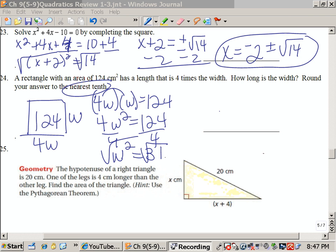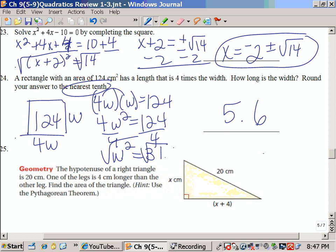The square root of 31 rounded to the nearest tenth is approximately 5.6. Technically I should be doing plus or minus, but since we're talking about length and width, I'm just going to use the positive 5.6.